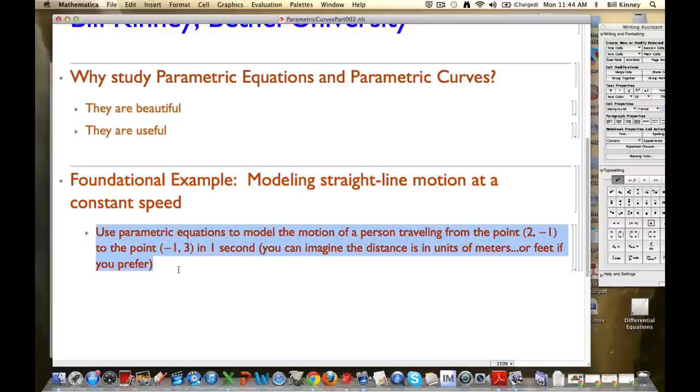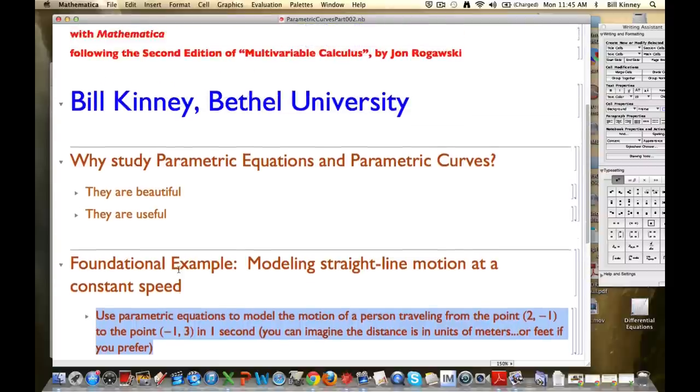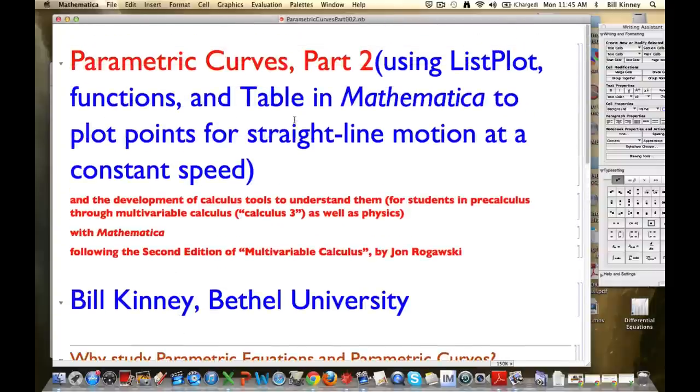We want to use parametric equations to model the motion of a person starting at the point (2,-1) and traveling to the point (-1,3) in one second. You can imagine the distance units to be whatever you want. Typically, meters would be the most popular thing to use. In that first part, I used a Mathematica command called ListPlot to plot three points that illustrated the motion. In this video, I want to use functions, honest to goodness regular functions from math, linear functions in fact, to model this motion in more detail. We're also going to introduce a new Mathematica command called table to help us do this.